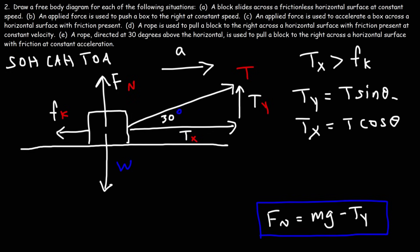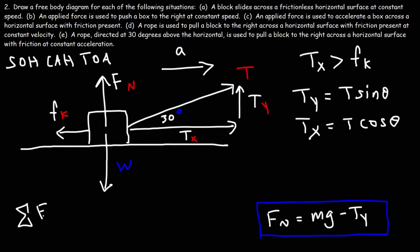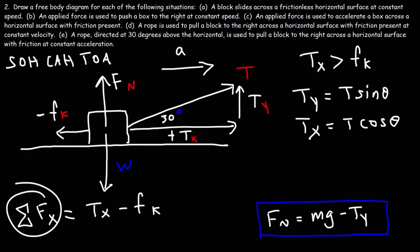You can plug T sine theta into the formula to get the normal force. To get the acceleration in the x direction, the sum of forces in the x direction is Tx minus Fk, which equals ma sub x according to Newton's second law. Tx is positive because it's going to the right, and Fk is negative because it's going to the left.